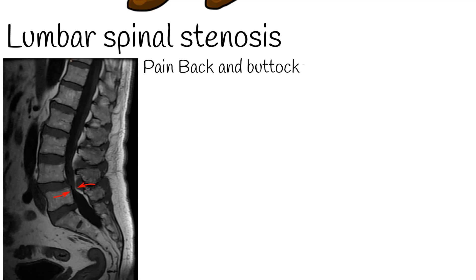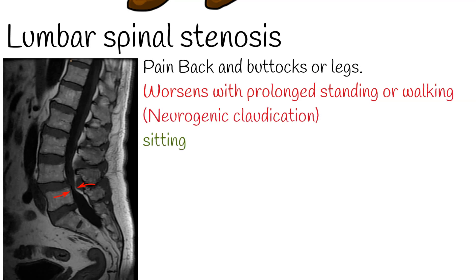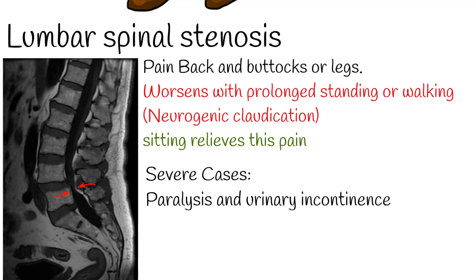Pain typically spreads in the back and buttocks or legs. Radiating leg pain that worsens with prolonged standing or walking is called neurogenic claudication. Sitting relieves this pain. Unlike lumbar herniation, in the case of lumbar stenosis, sitting relieves pain. Severe neurologic deficits, including paralysis and urinary incontinence, can occur but are rare.